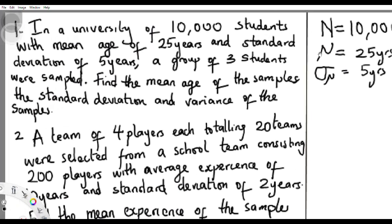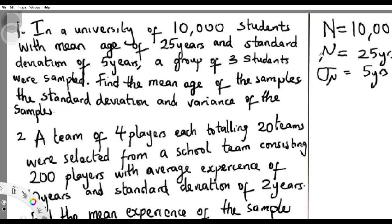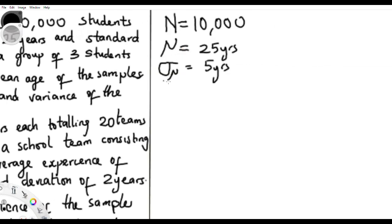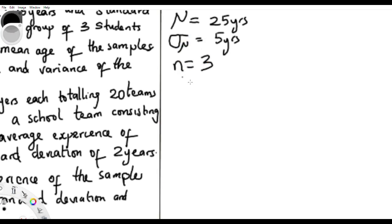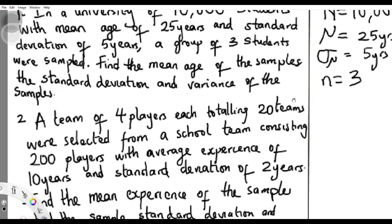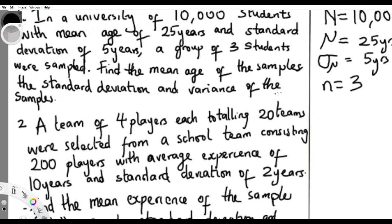The question calls for sampling a group of three students, meaning each sample contains three students. Now, it's straightforward — this is theorem one. Sometimes the question may not state whether sampling is done with or without replacement, but since you are picking a group of three students each time from the population, you can't really sample them with replacement.